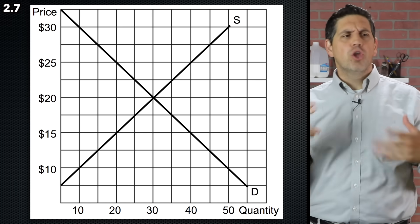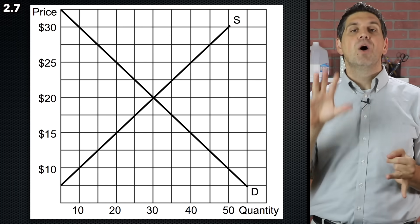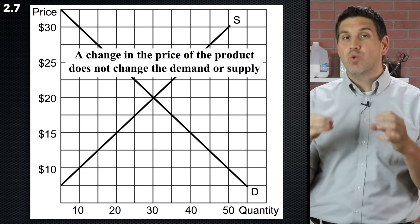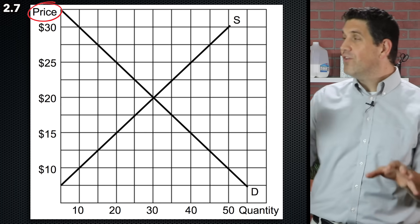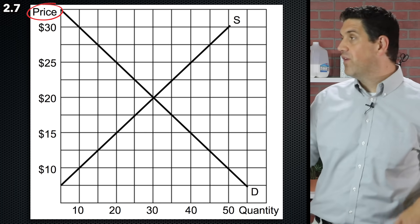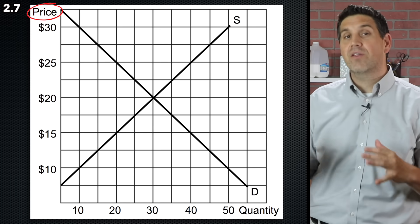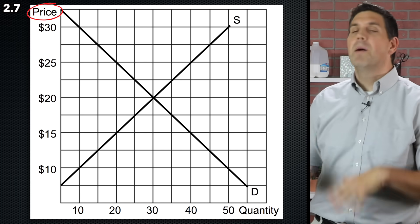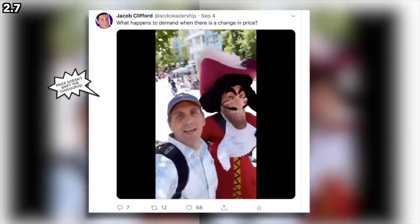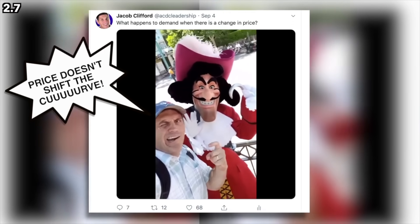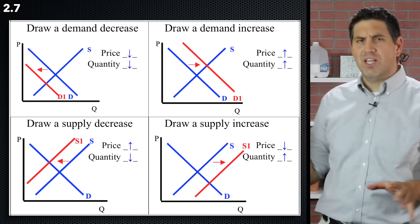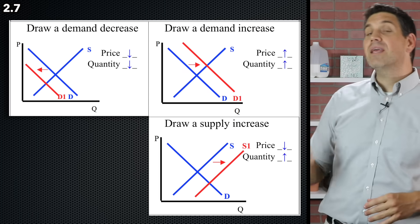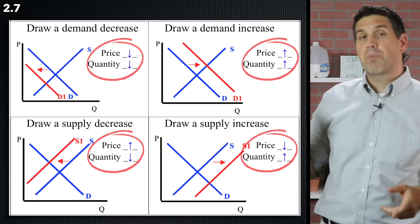Every year some students get confused: the price of substitutes affects demand, and the price of resources affects supply, but the price of that actual product does not shift demand or supply. Here's a trick: whatever's on the Y axis doesn't shift the curve. So a change in price doesn't shift either curve. Fill out topic 2.7 on the study guide and make sure you can show shortage, surplus, and the four different single and double shifts.